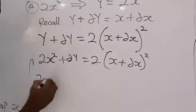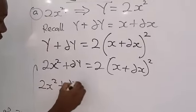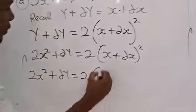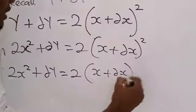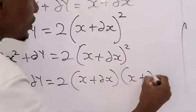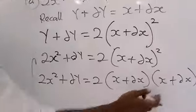It simply means that you have 2X squared plus change in Y equal to 2 open bracket X plus change in X times X plus change in X. That is the meaning of this square. You open it in two brackets.